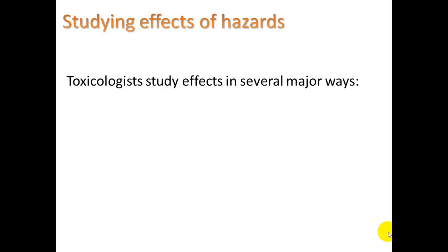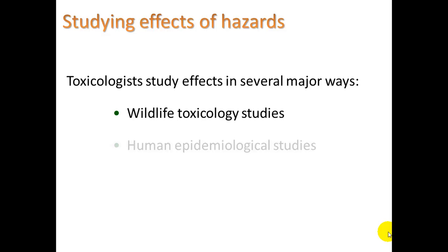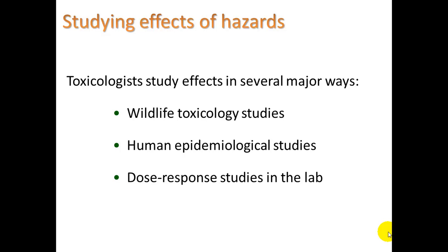Toxicologists study effects in several major ways. One of them is wildlife toxicology studies — for example, with DDT, to discover that DDT was affecting the shells of birds. Another is human epidemiological studies, which are long-term studies, for example comparing smokers versus non-smokers over their lifetime. And dose response studies in the lab, which are often done with lab rats.